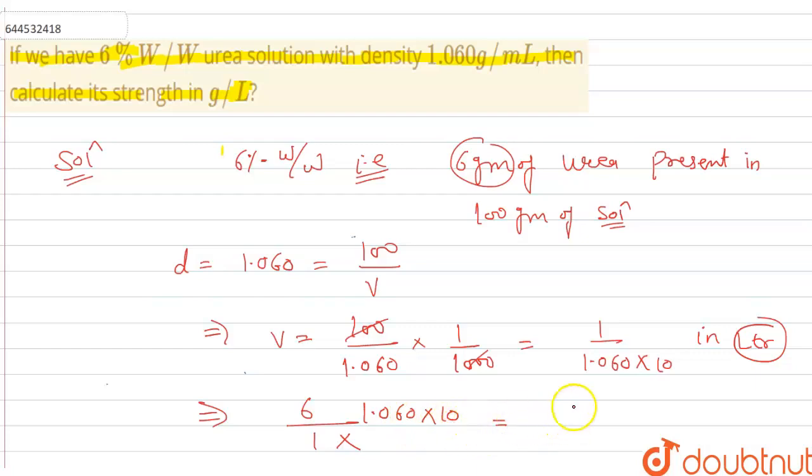So it will be 60 into 1.060, that is 63.6 gram per liter. This is your correct answer and I hope it is clear to you.